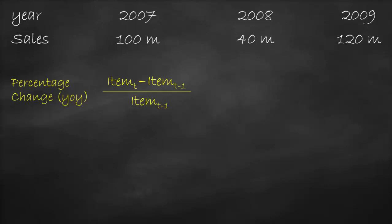The percentage change in 2008 is $40 million minus $100 million, all divided by $100 million, which is equal to negative 60%. This means that the company has lower sales by 60% in 2008 compared to the previous year of 2007.